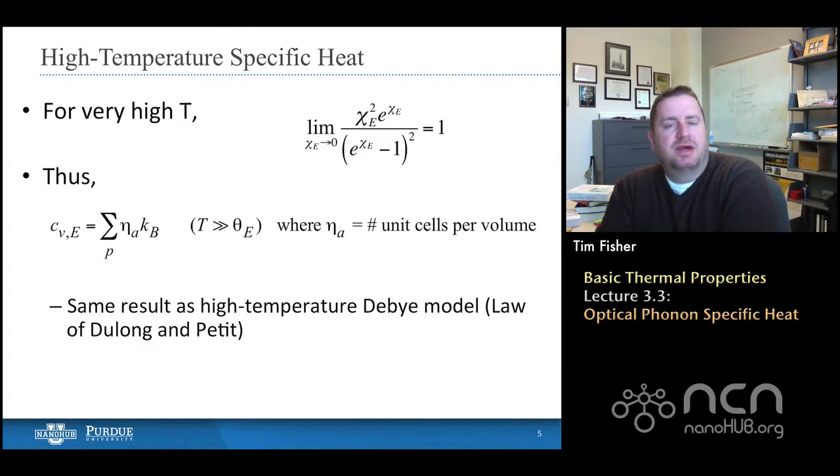Now the Einstein model for optical phonons is particularly good for very high temperatures. These would be temperatures that are substantially higher than even the, what is already a high temperature, that is the Einstein temperature is generally large, because the optical frequencies are fairly high. But if we get to temperatures above that, then we can evaluate this for very high temperatures. And in fact that term with the chi's and the exponents of chi's, the limit of that as chi goes to zero, which would be the high temperature limit, if you look back at the definition that we just made. The limit of that whole term is one, and therefore the specific heat, the Einstein specific heat for high temperature, is just a sum over the unit cell density multiplied by Boltzmann's constant, and the sum is over the branches.